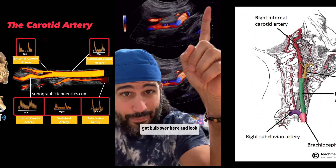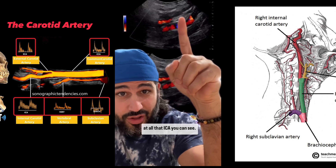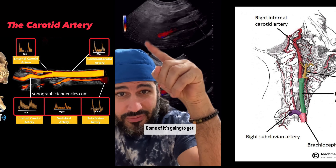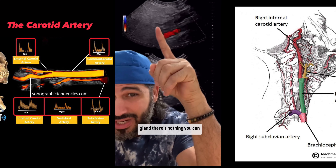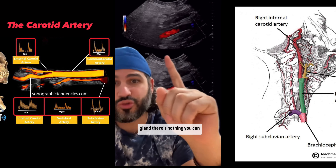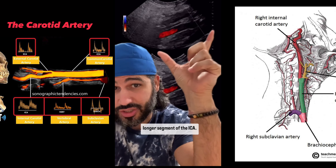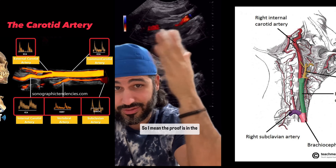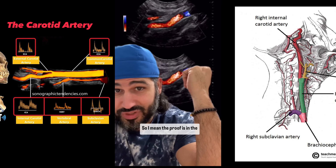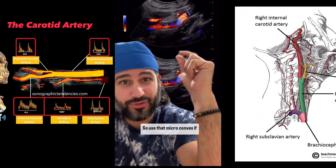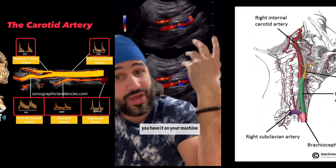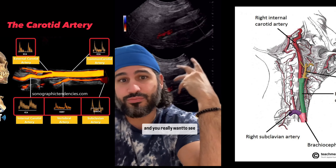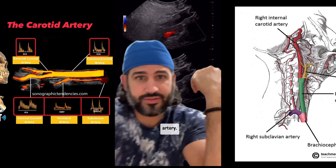Now with the micro-convex, you've got the bulb over here — look at all that ICA you can see. Some of it's going to get blocked out once you reach the parotid gland; there's nothing you can do about that. But you're getting a larger, longer segment of the ICA. The proof is in the pudding — use that micro-convex if you have it available and you really want to see more of the internal carotid artery.